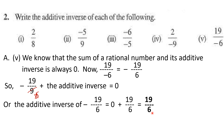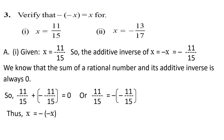Question number three: verify that minus minus x equals x. We will show two methods. Part one: given x equals eleven upon fifteen. The additive inverse of x is minus x, which equals minus eleven upon fifteen. Since the sum of a rational number and its additive inverse is zero: eleven upon fifteen plus bracket minus eleven upon fifteen close bracket equals zero. Therefore eleven upon fifteen equals minus of minus eleven upon fifteen, which is minus minus x, proving x equals minus minus x.